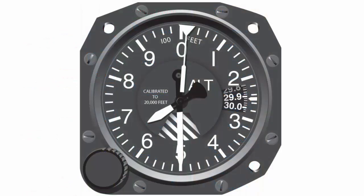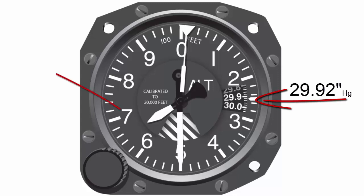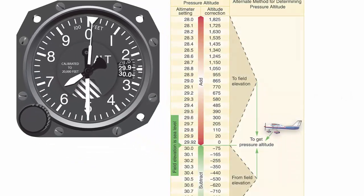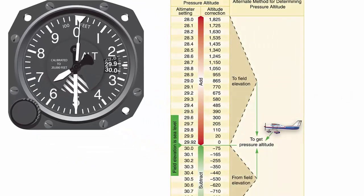Pressure altitude can be determined by one of two methods. Method one is setting the barometric scale of the altimeter to 29.92 and reading the indicated altitude. Method two is applying a correction factor to the indicated altitude according to the reported altimeter setting.